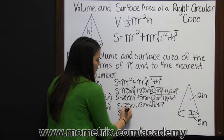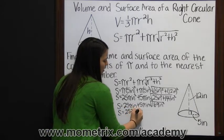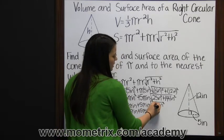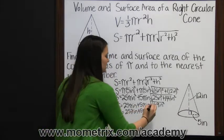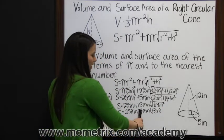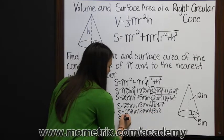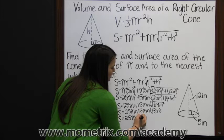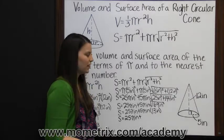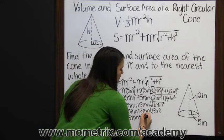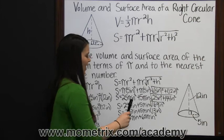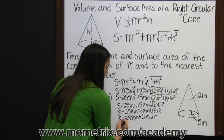Then we need to take the square root of that. So the surface area is twenty-five pi inches squared plus five pi inches times the square root of one hundred sixty-nine inches squared, which is thirteen inches. Now we can multiply five pi inches times thirteen inches. So surface area is twenty-five pi inches squared plus five times thirteen — sixty-five — pi inches squared. Now finally we can add twenty-five pi inches squared plus sixty-five pi inches squared.